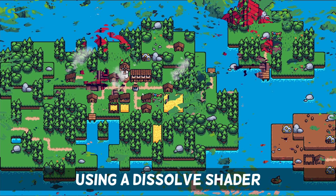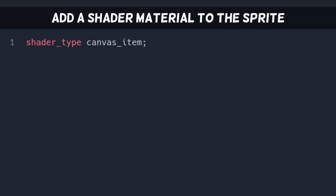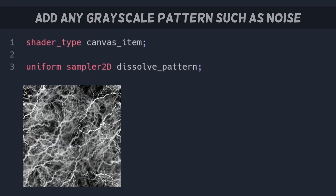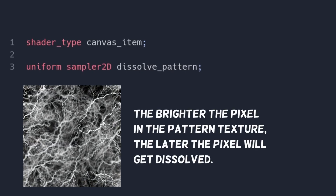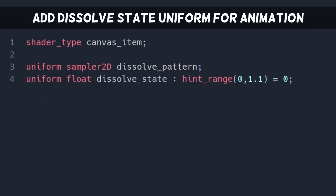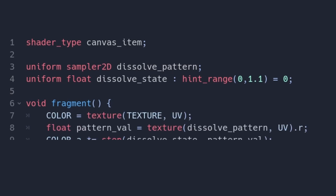We can even apply a simple shader to it. For example, we can dissolve it. For this, we just add another texture, maybe a bit of noise. We interpret the brightness of the texture as its internal resistance to being dissolved. We need a uniform for the dissolve state that we can interpolate.